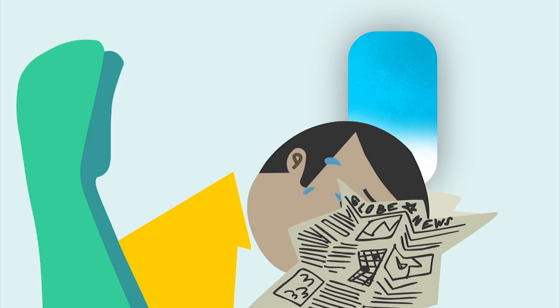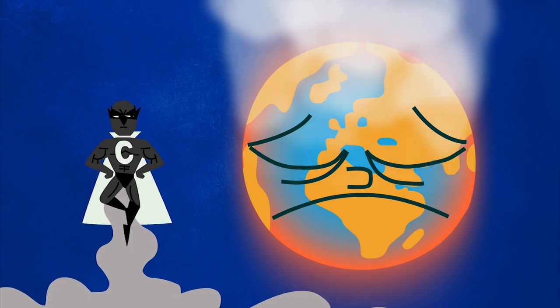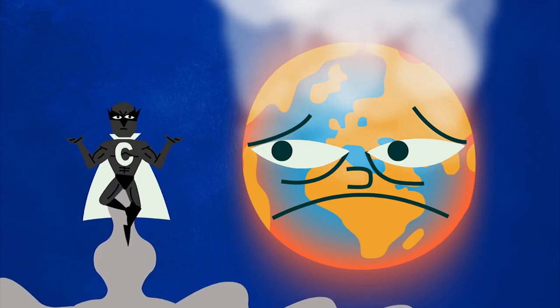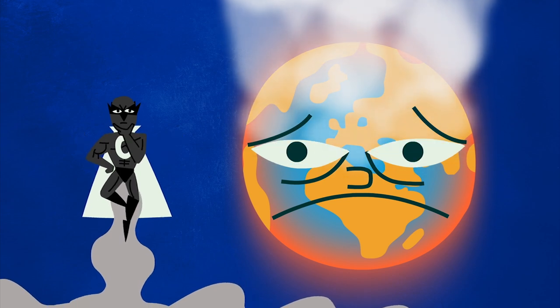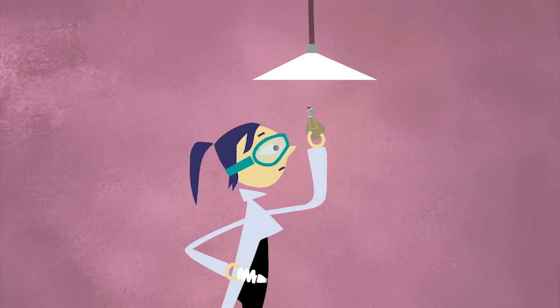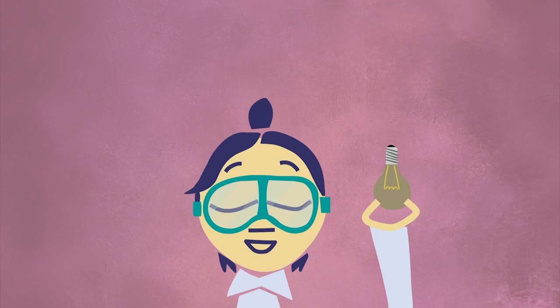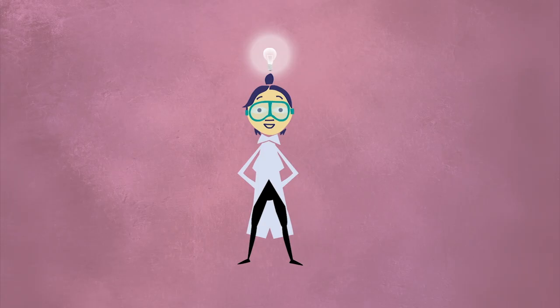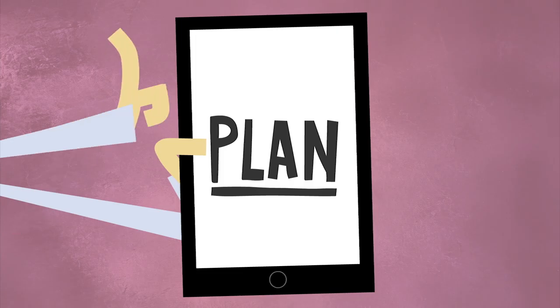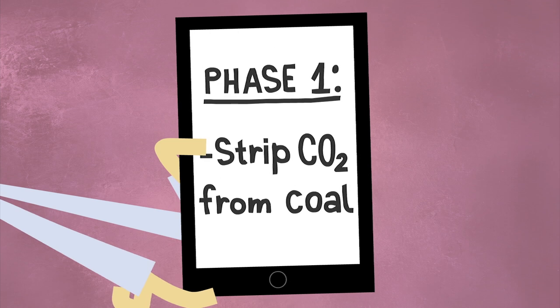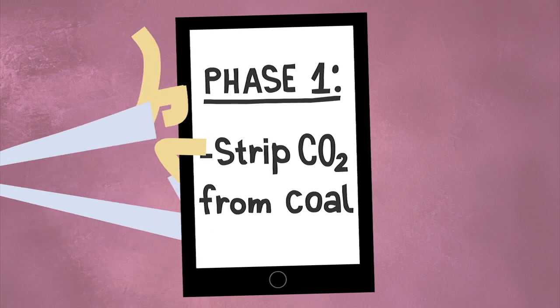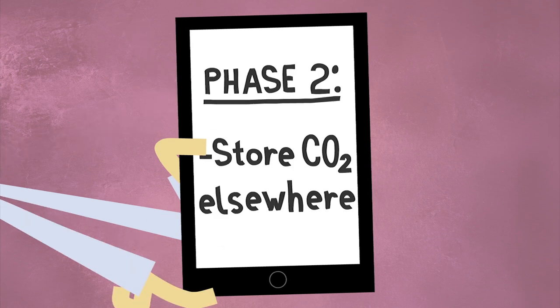Since, for the time being, coal is here to stay, experts say that if we want to reduce its emissions impact on the atmosphere and slow down climate change, we'll have to think of creative ways of reducing coal's destructive power. To do that, we need to strip it of its foul forces, all that toxic carbon dioxide that causes havoc in the atmosphere. Then we need to store this CO2 somewhere else.